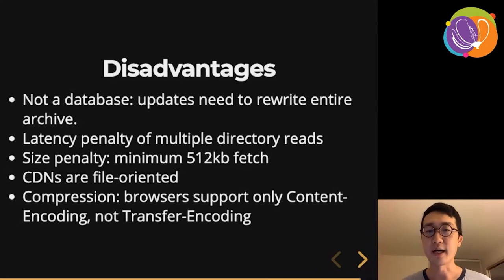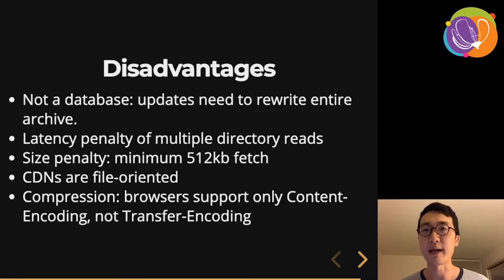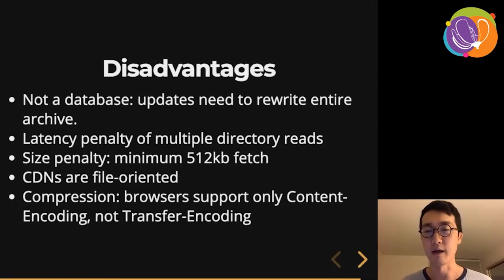There's also a size penalty: even for very small archives you have to read at least 512 kilobytes every time just to fetch the root directory. PMTiles doesn't interact well with CDNs, which are usually oriented around individual file assets and not byte ranges inside files. There are some serverless ways to translate between how CDNs work and PMTiles, but that is an area of active development. A major downside is compression: serving from PMTiles directly to the browser, you can't compress the data with generic gzip content-encoding when reading byte ranges, and transfer-encoding is not widely supported by browsers.